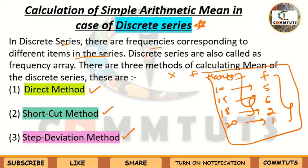Discrete series are the series where the frequency of each item is also given. Discrete series are also called a frequency array. There are three methods of calculating the mean of a discrete series: Direct Method, Shortcut Method, and Step Deviation Method.